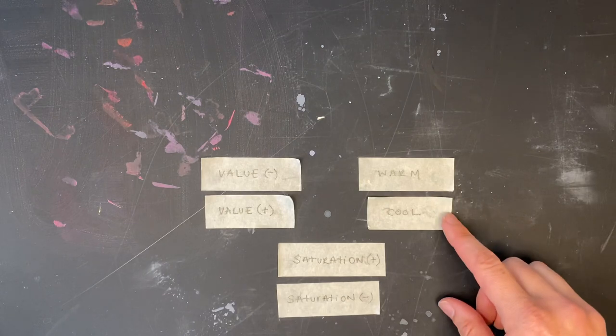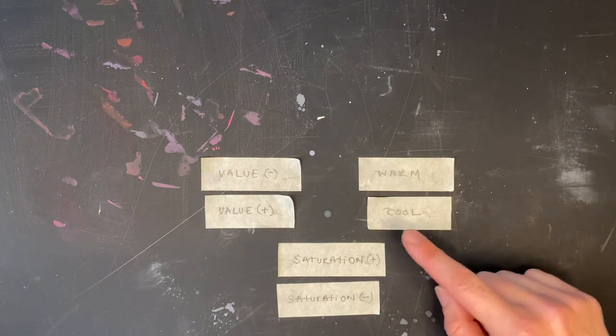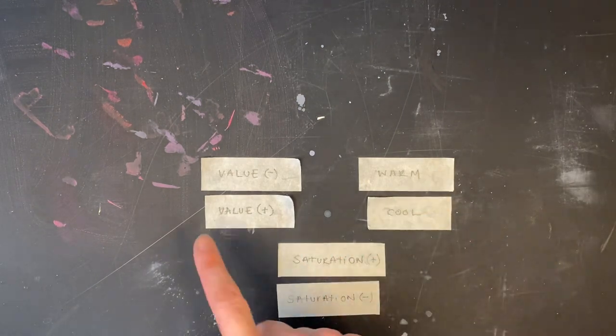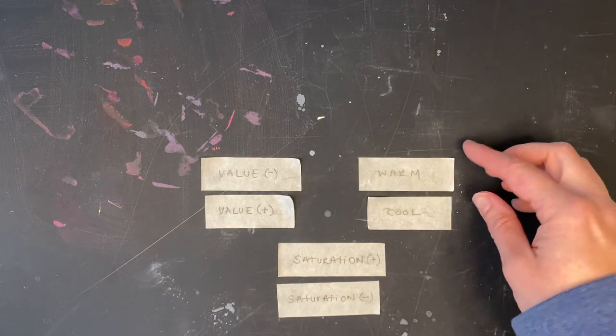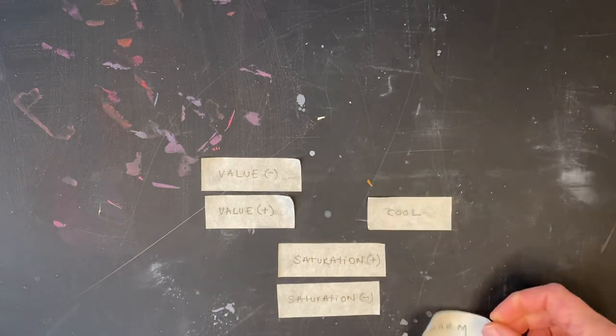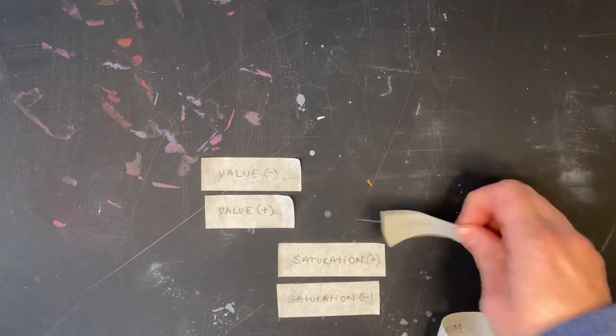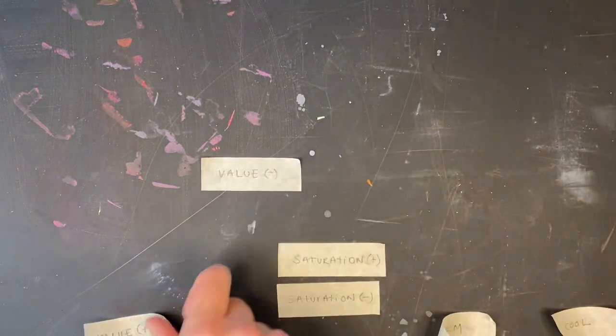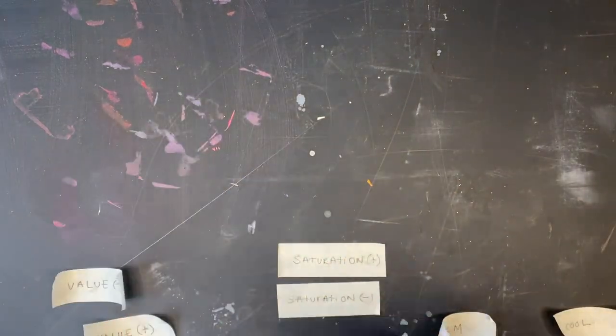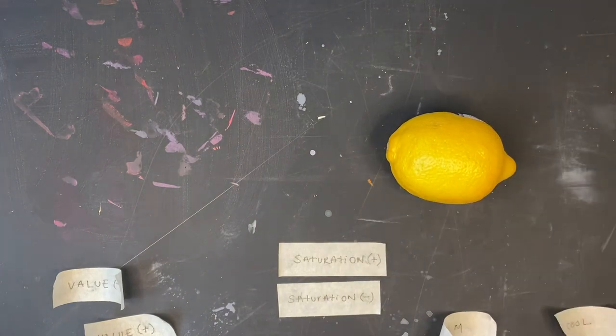So what I have here is six pieces of tape that I've labeled with warm, cool, value plus, minus, saturation plus, minus. So I'm going to start with the yellow hue family. And the two objects I have here, I have this lemon and then I have this dish towel.